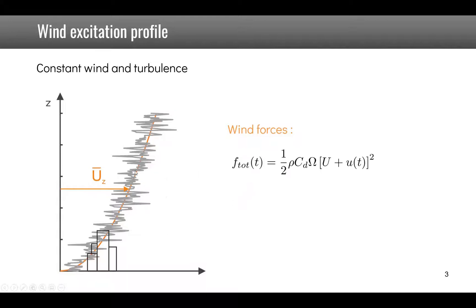So the total forces due to the wind can be written as one half times the density of the air times the aerodynamic coefficient times the surface of the building perpendicular to the wind times the constant part of the wind plus the fluctuating part squared.